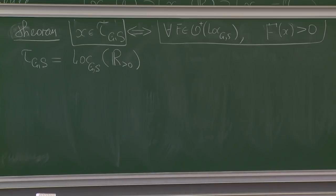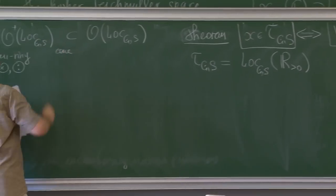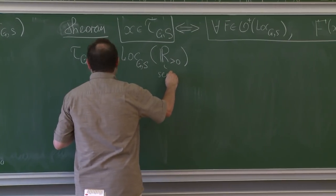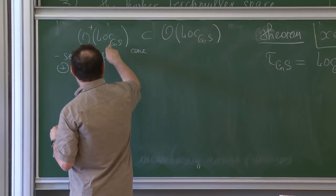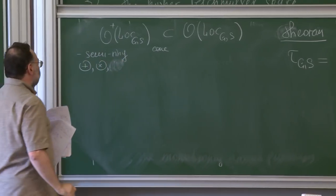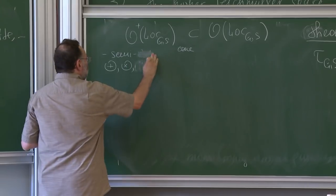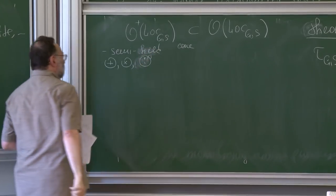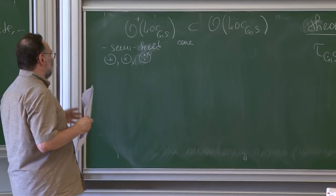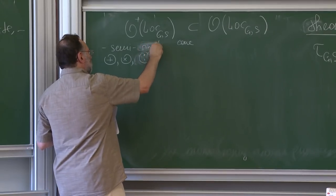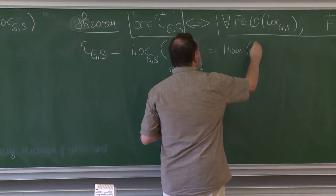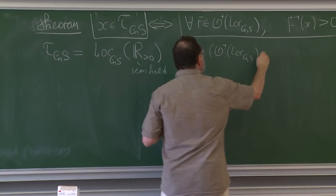You can phrase this by saying that the locus tau G_S is obtained by taking log G_S and taking its locus of positive points. Usually in algebraic geometry we are not allowed to take positive points, but this space has a particular structure — it's a cone, a semi-field. You can consider homomorphisms from O^+ of log G_S to any semi-field. So you can take any semi-field and evaluate.